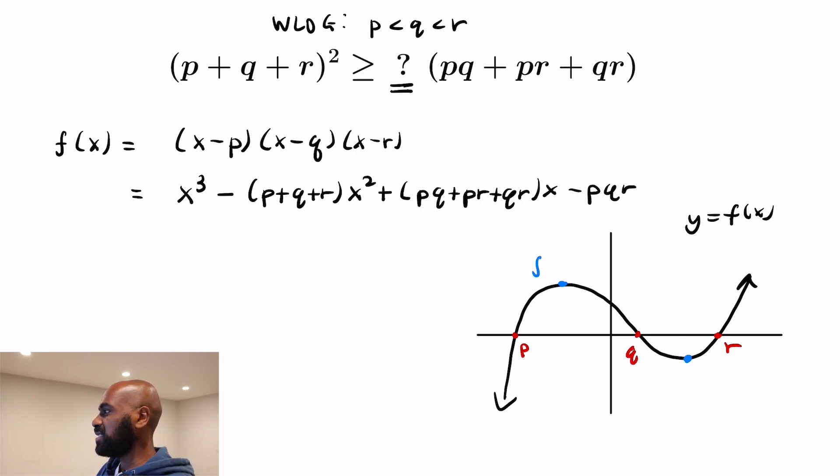where we see them labeled here in blue. And these critical points are points where the derivative is zero. If we take the derivative of the function we have, it's 3x² - 2(P+Q+R)x + (PQ+PR+QR).